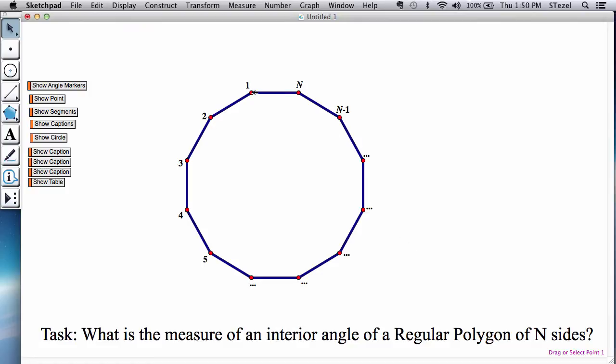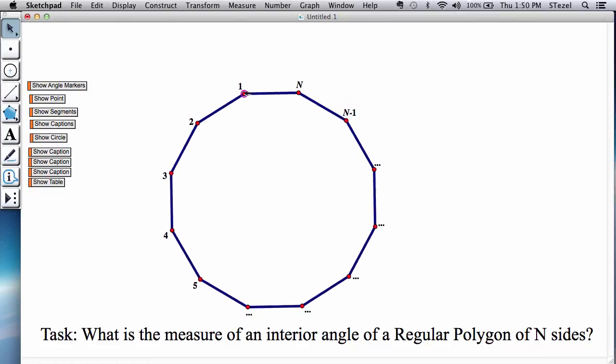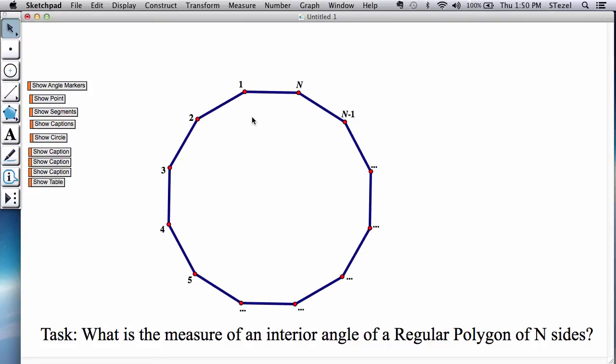First of all, let us remember that a regular polygon is a polygon that has all of its sides and all of its angles congruent. Congruent basically means equal.